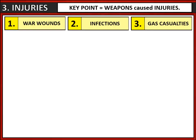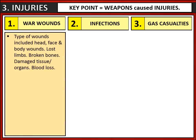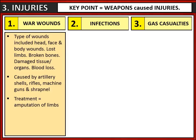Let's do an overview of the injuries that soldiers received while fighting in World War I. A key point to remember is that weapons caused injuries. Looking at war wounds, the type of wound would vary depending on where in the body the wound occurred — whether it was the head, the face, or other parts of the body. The key thing they had in common is that blood loss was a real problem, especially if soldiers didn't receive treatment in time. Treatment would vary depending on where in the body the wound was received and how bad it was, but one treatment could be amputation of a limb. As the war went on, the army tried to prevent war wounds, and one example is how they issued soldiers with steel helmets to protect their heads.